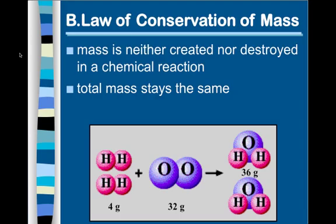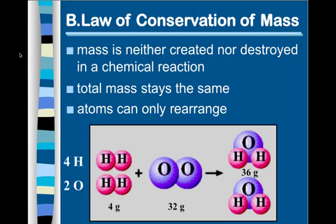And remember, only the rearrangement of atoms is what a chemical reaction is. You can only rearrange atoms in a chemical reaction. So, if I have four hydrogens and two oxygens on the left side of this reaction, then on the right side of the arrow, I must also have four hydrogens and two oxygens. That's crucial to remember.